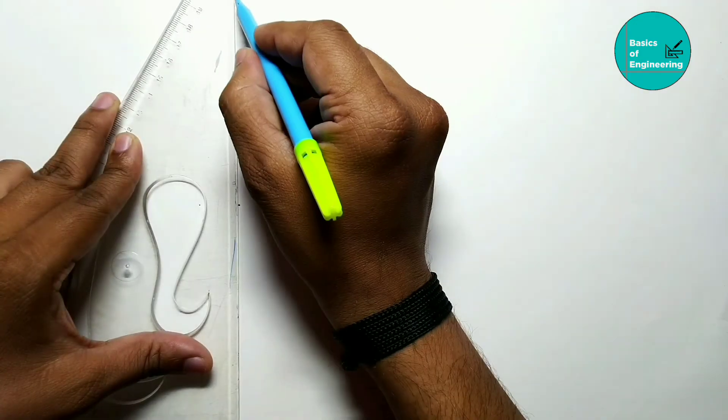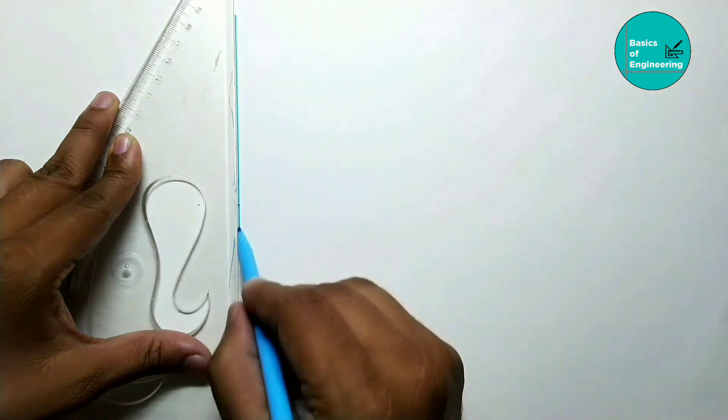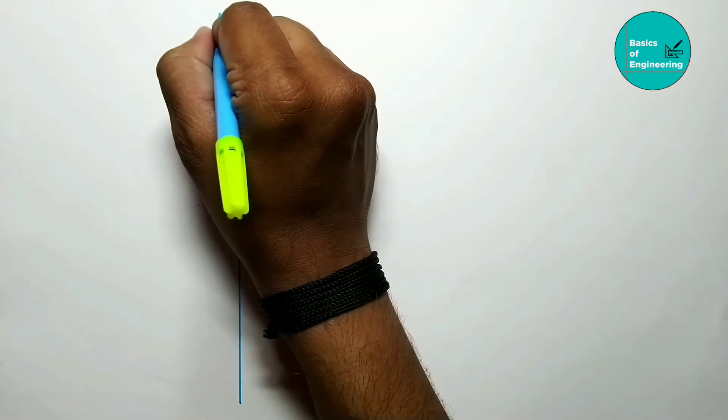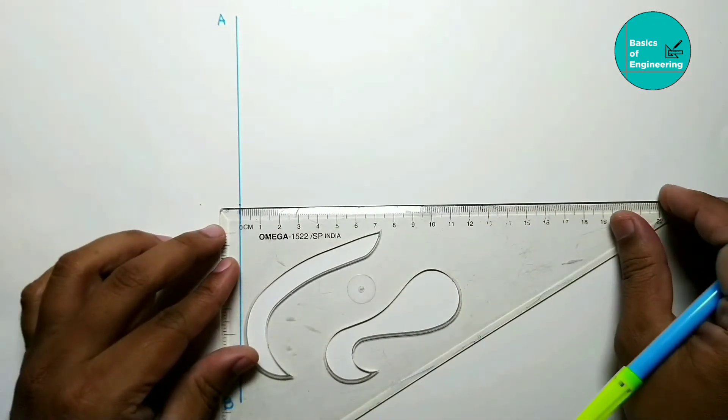Let's start the problem. First of all, draw one directrix. This is a straight line called directrix. Give the name A and B, and from center, draw one axis.